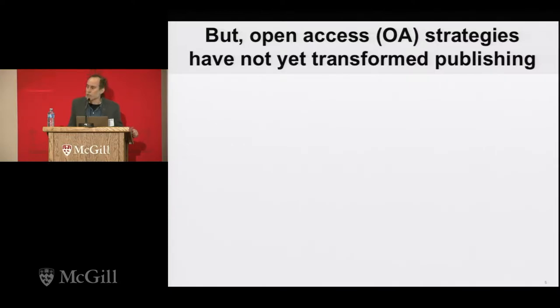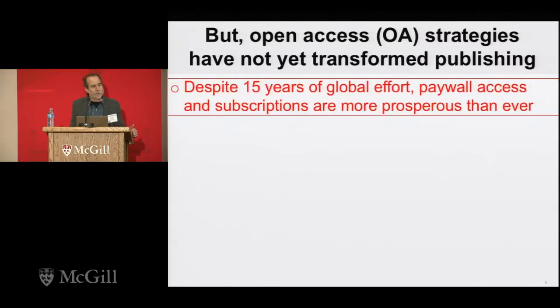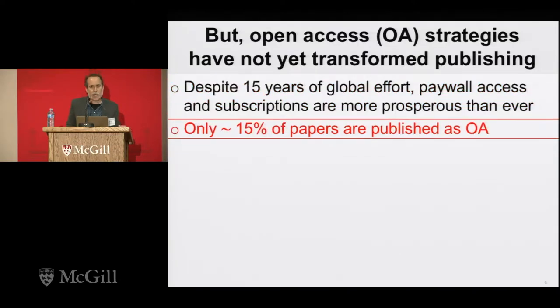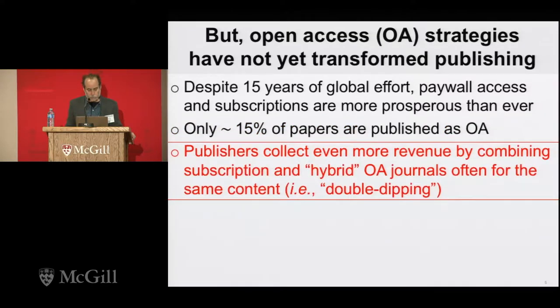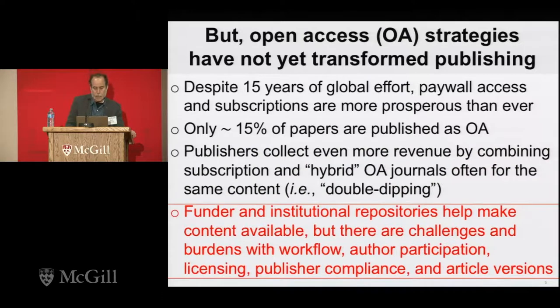Has this done enough? Has this helped us achieve the goals we wanted? The answer really is no. Open access strategies have not yet transformed scholarly communication the way we envisioned. Despite 15 years of global effort, paywall access and subscriptions are more prosperous than ever — still the predominant mode. Only about 15% of papers published are primarily open access; 85% is behind a paywall. Publishers have figured out a great scheme: collecting even more revenue by combining subscription and hybrid open access journals for the same content — so-called double dipping. And while funder and institutional repositories help, there are challenges with workflow, author participation, licensing, publisher compliance, and article versions.